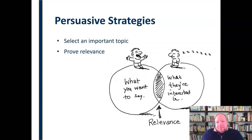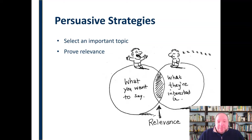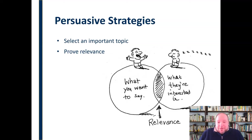We want to prove the relevance to the audience. We have to convince them of why this is important. What we want to say and what they're interested in — somewhere in there has to be some relevance. And if the audience doesn't understand that at first, then it's our job as a speaker to help them understand that relevance, to convey it, and to pull them in. Some topics the audience may automatically be interested in, but if not, we need to demonstrate that relevance and show them why this is an important topic.